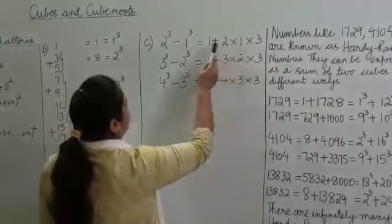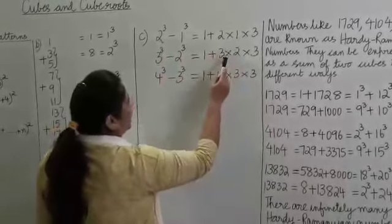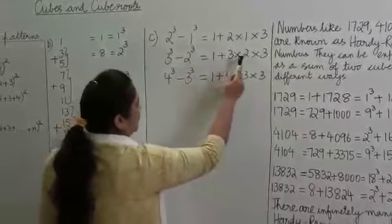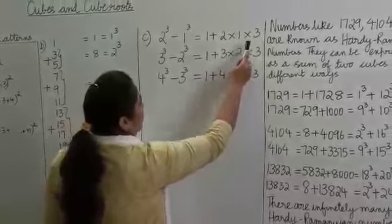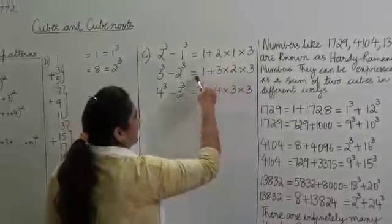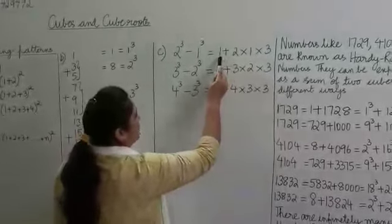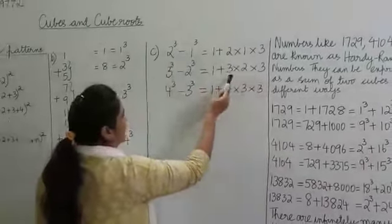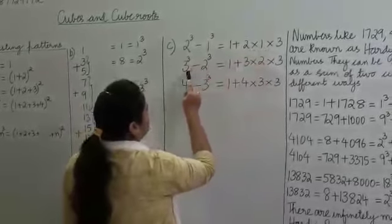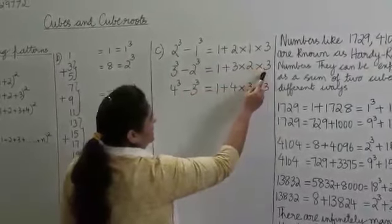Here it was 2 into 1, and here it was 3 into 2 — so 3 into 2 into 3. So the pattern is: we start with 1 plus, then the product of the two consecutive numbers, into 3. Here it would be 3 into 2 into 3.